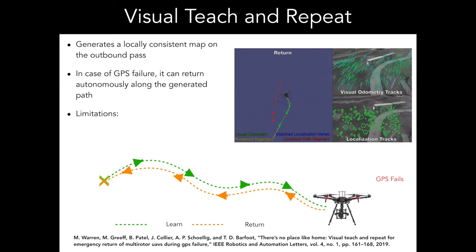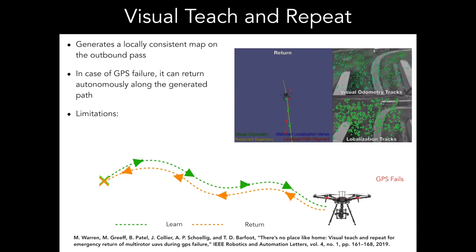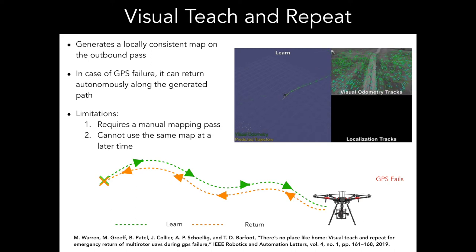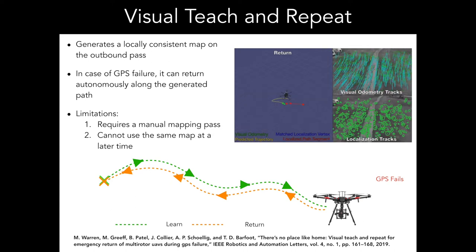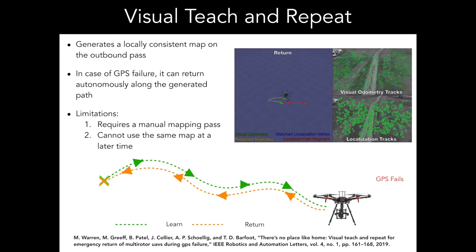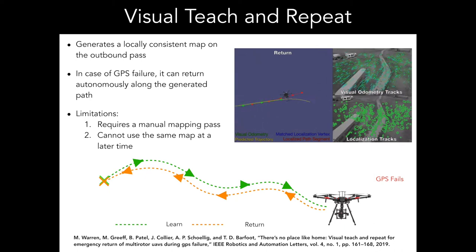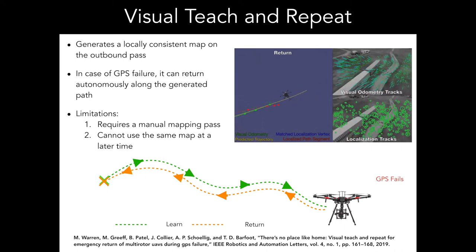There are two main limitations to this system. The first is that a manual outbound mapping pass is required. The UAV cannot fly autonomously on its own in new never-before-seen areas. The second limitation is that since the map relies on feature matching, shadows from an aerial perspective can have significant impact on scene appearance, making it difficult to localize to a map that was created much earlier at a later time.